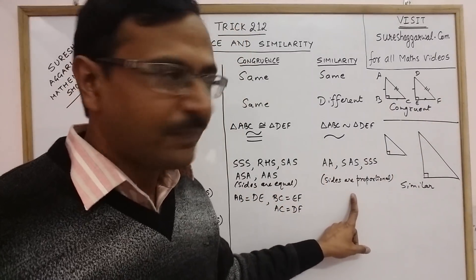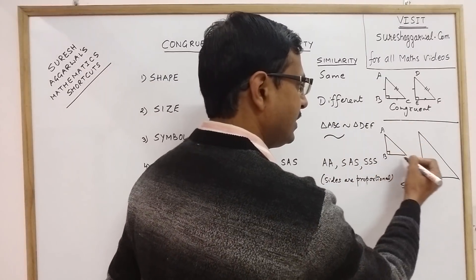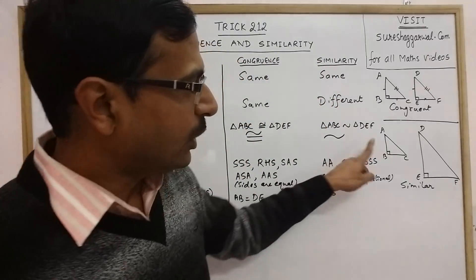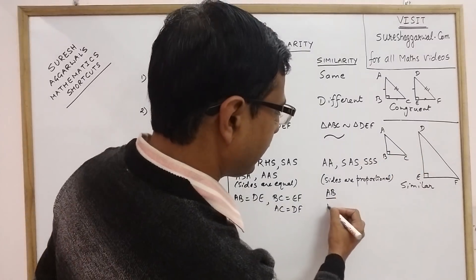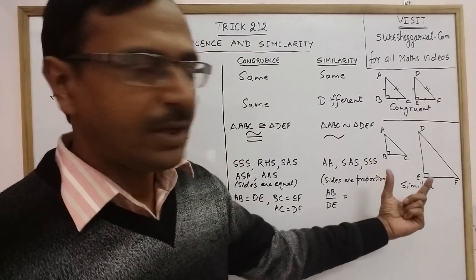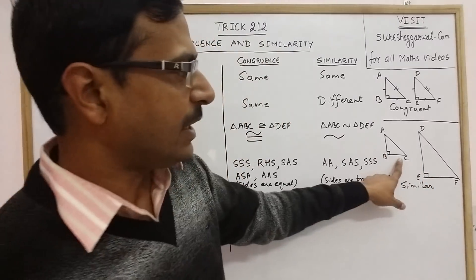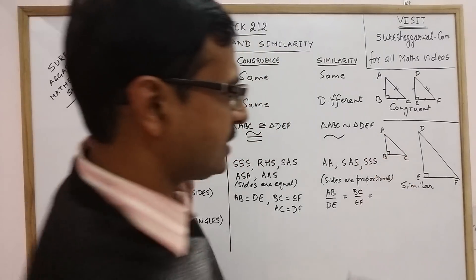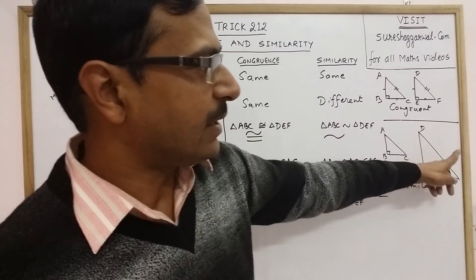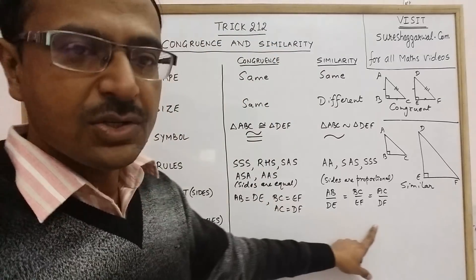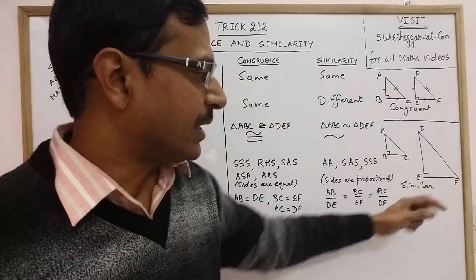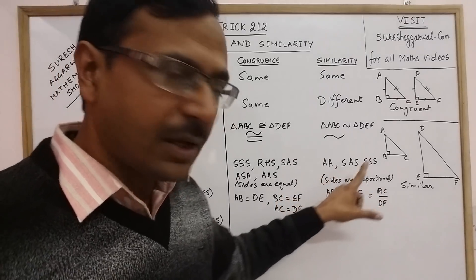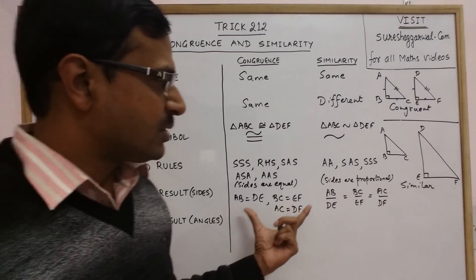In the case of similar triangles ABC and DEF, we take the ratios of corresponding sides: AB to DE, BC to EF, and AC to DF. These three ratios of the corresponding sides of two similar triangles are equal. When the ratios are equal, we say the sides are proportional. This is the relationship between the sides of similar triangles.